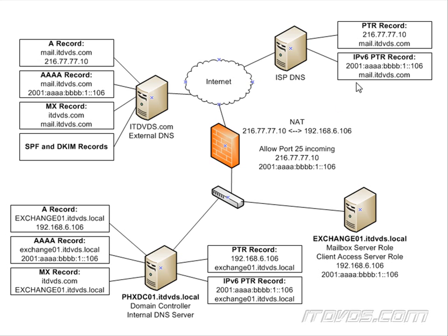Now there are also going to be multiple DNS servers we're going to be working with here. We've got our internal DNS server that's on our local area network. We've got our external DNS server out on the internet for itdvds.com. We also may be working with our ISP or Internet Service Provider's DNS server in order to create reverse DNS records or pointer records. Initially we're going to set this up as if our Exchange server — Exchange 01 — that's going to have our mailbox server role and our client access server role, is actually going to do the sending and receiving of email from the internet.